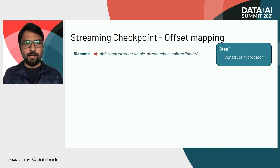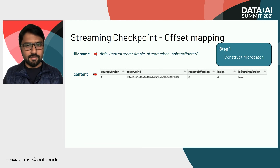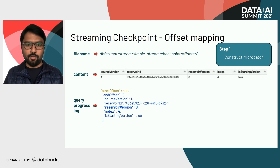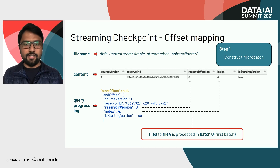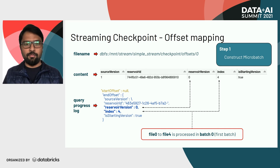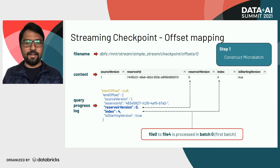Taking the example offset file at offsets/0 — the offset file generated for micro batch ID zero — the content directly maps to the query progress log for that micro batch: reservoir version zero, index, and isStartingVersion all match. Note that Spark always stores the contents of the end offset, never the start offset, because it is redundant — you can always look back at the previous micro batch offset file if needed.